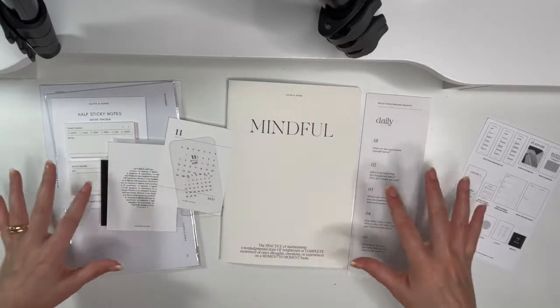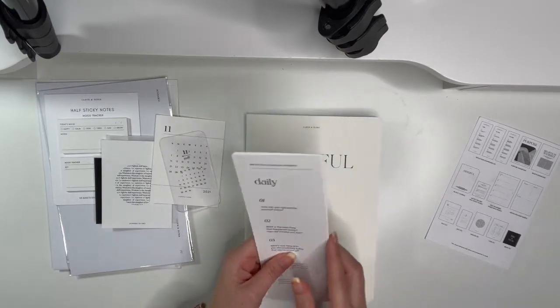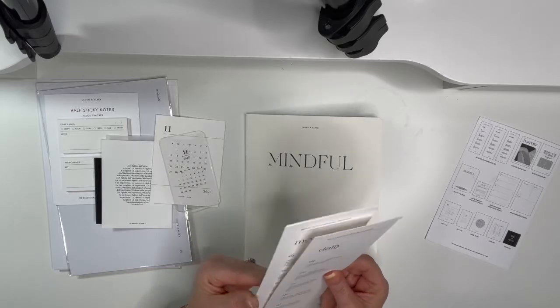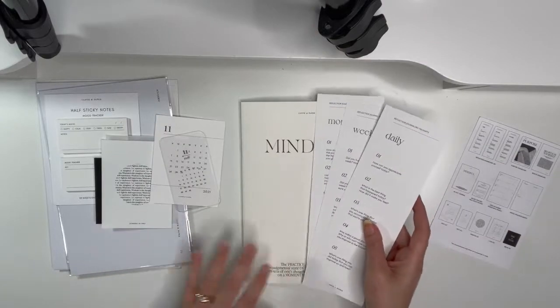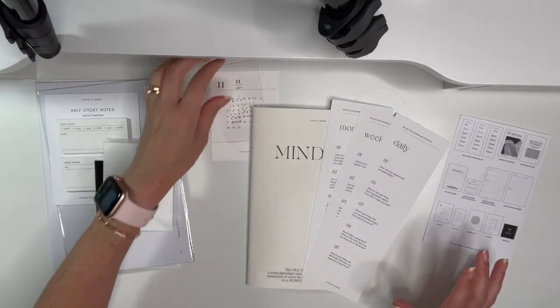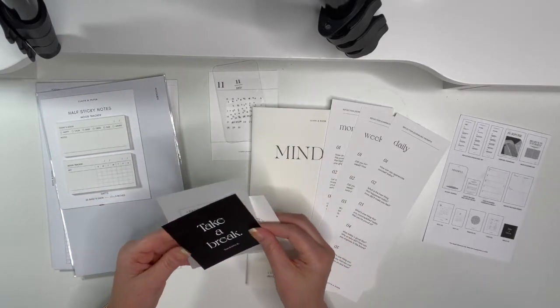So anyways, hopefully this doesn't look too dark and you enjoyed this video. So this was the September Cloth and Paper subscription box. Yeah, I like it. I like it. I don't, when I get my subscription boxes, I don't necessarily use everything, but then there are certain things that I absolutely love and use a lot of.